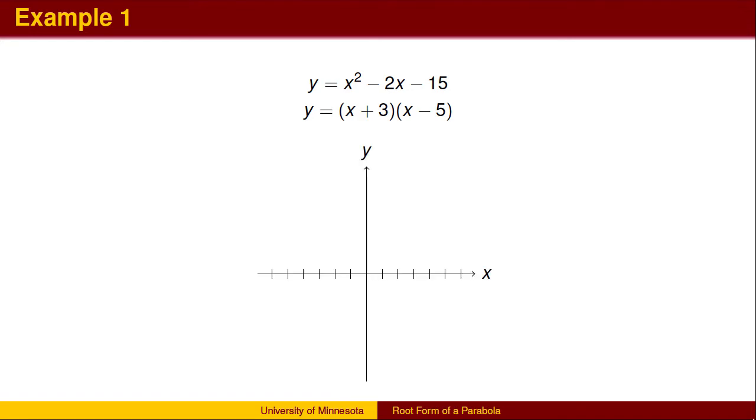The advantage of factoring the polynomial is that we can now determine the roots from the factor-root theorem. Since x minus 5 is a factor, then one of the roots is 5, and therefore 5 is an x-intercept. From the factor of x plus 3, we can see the other root is at negative 3.